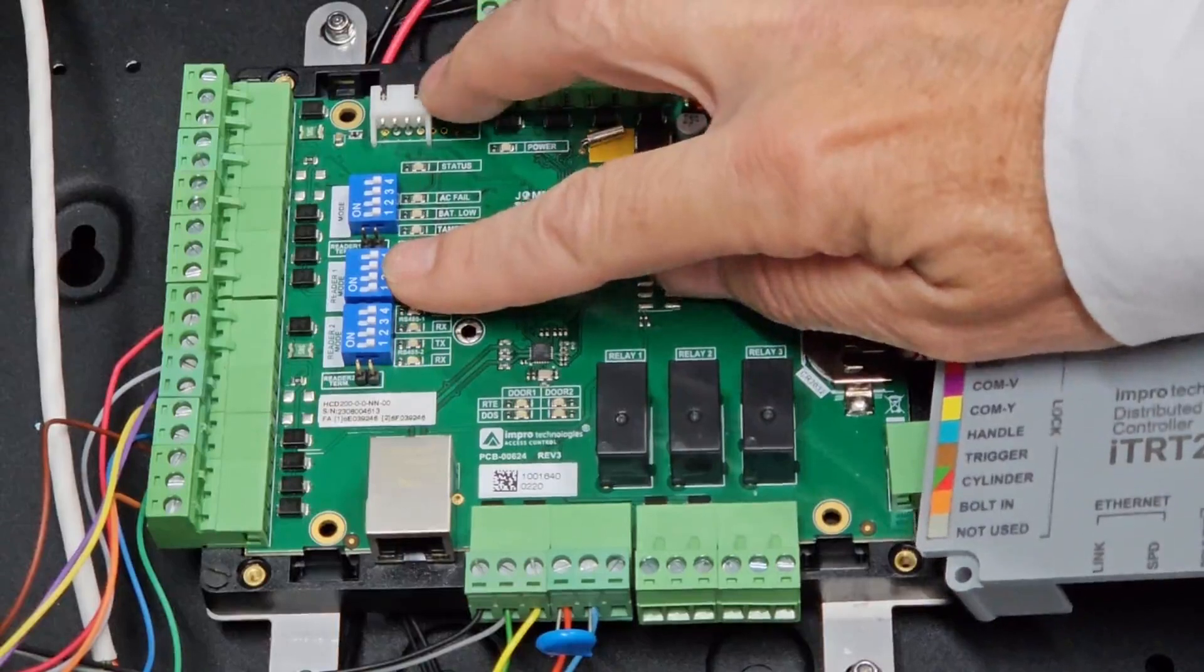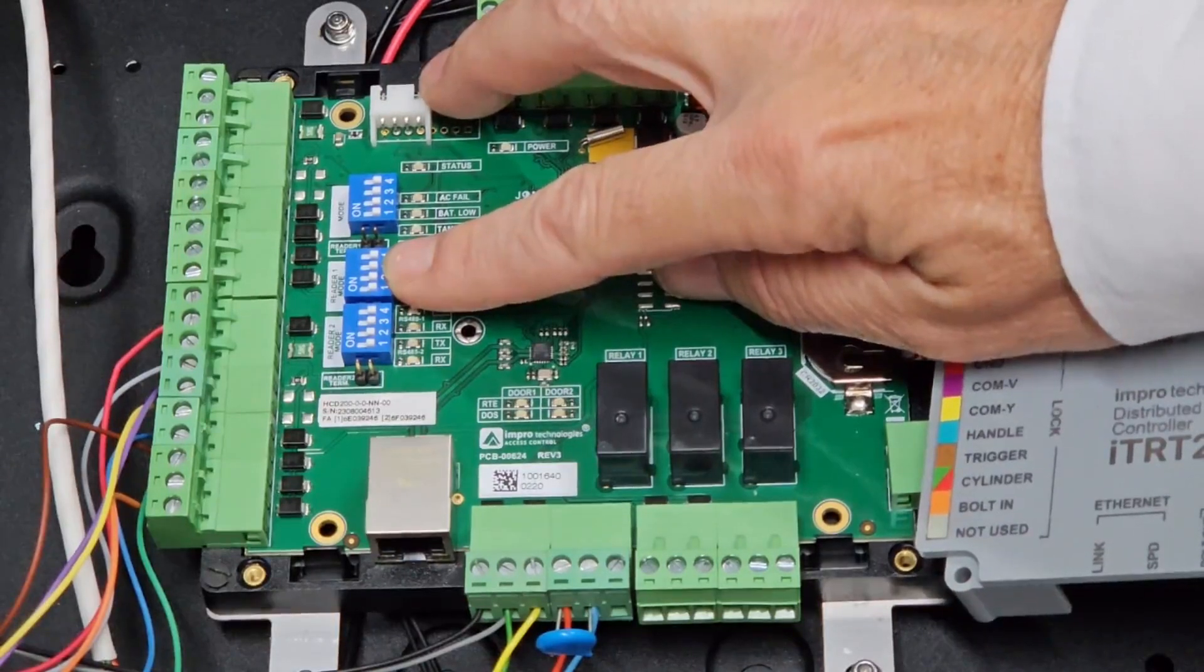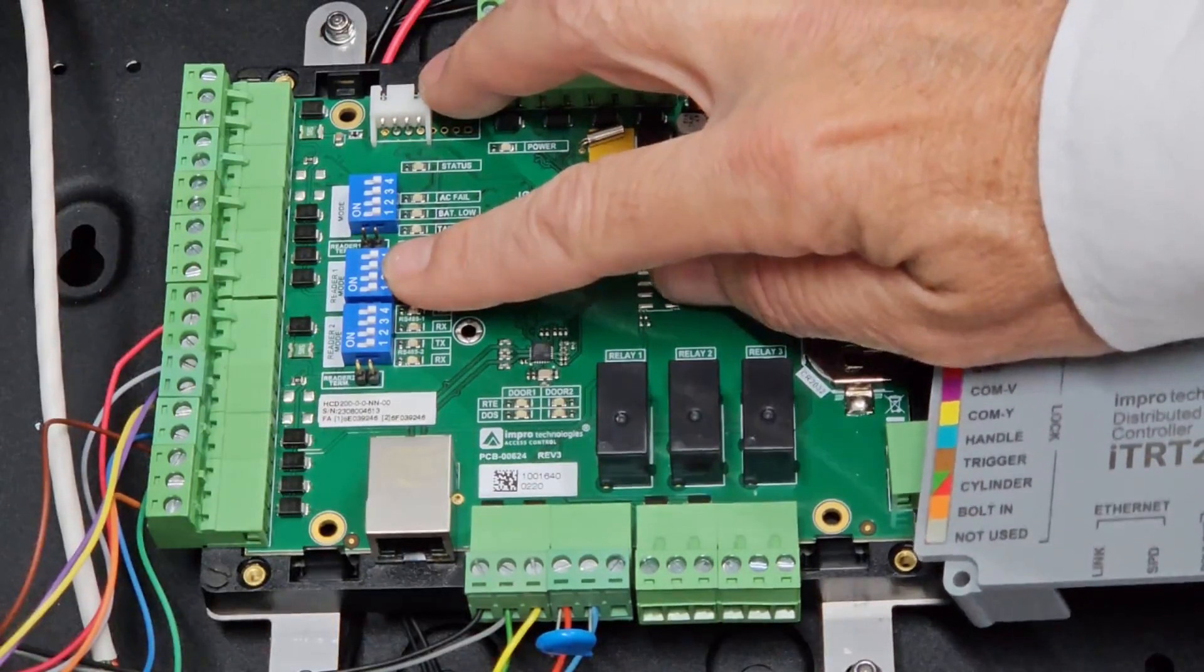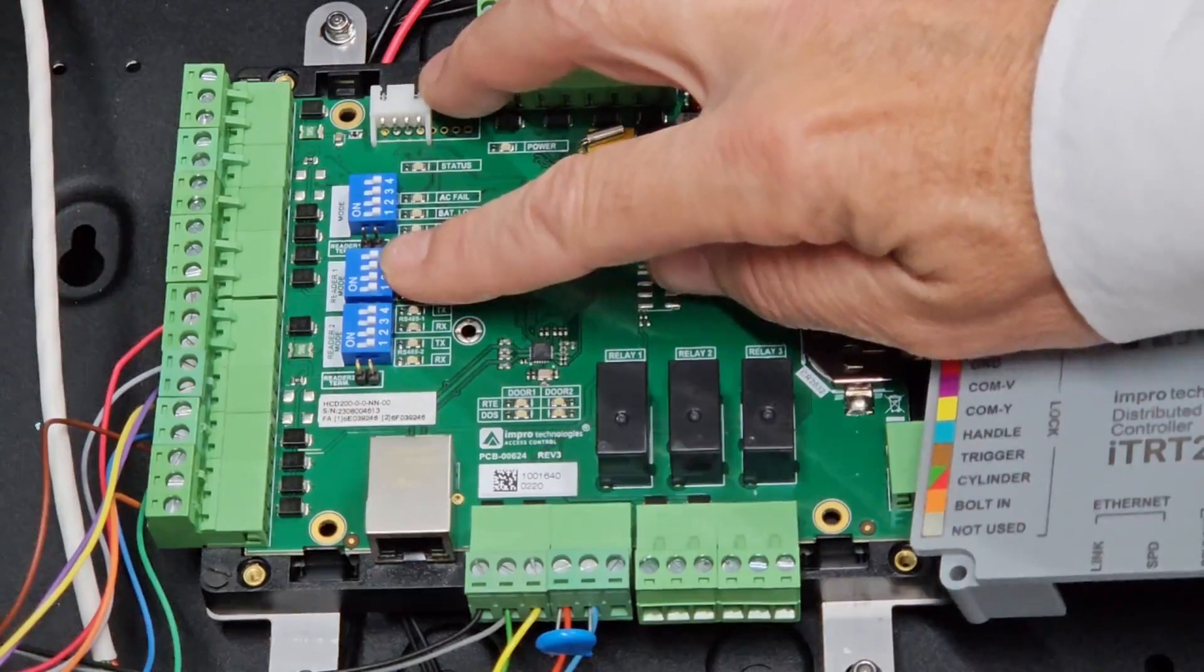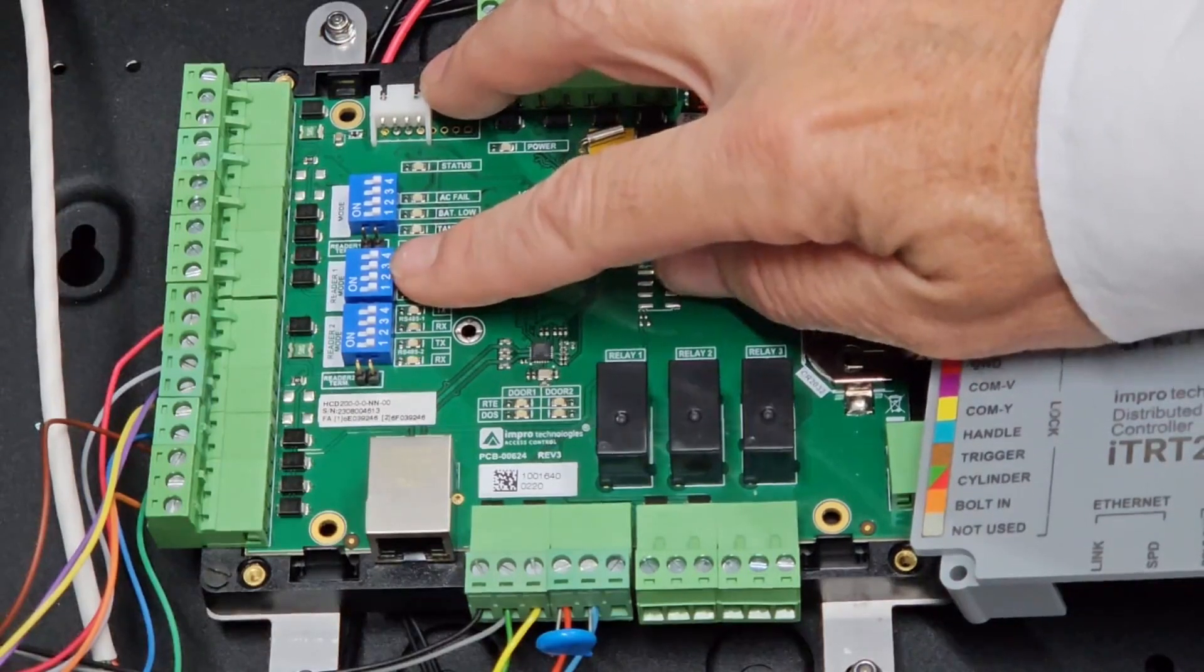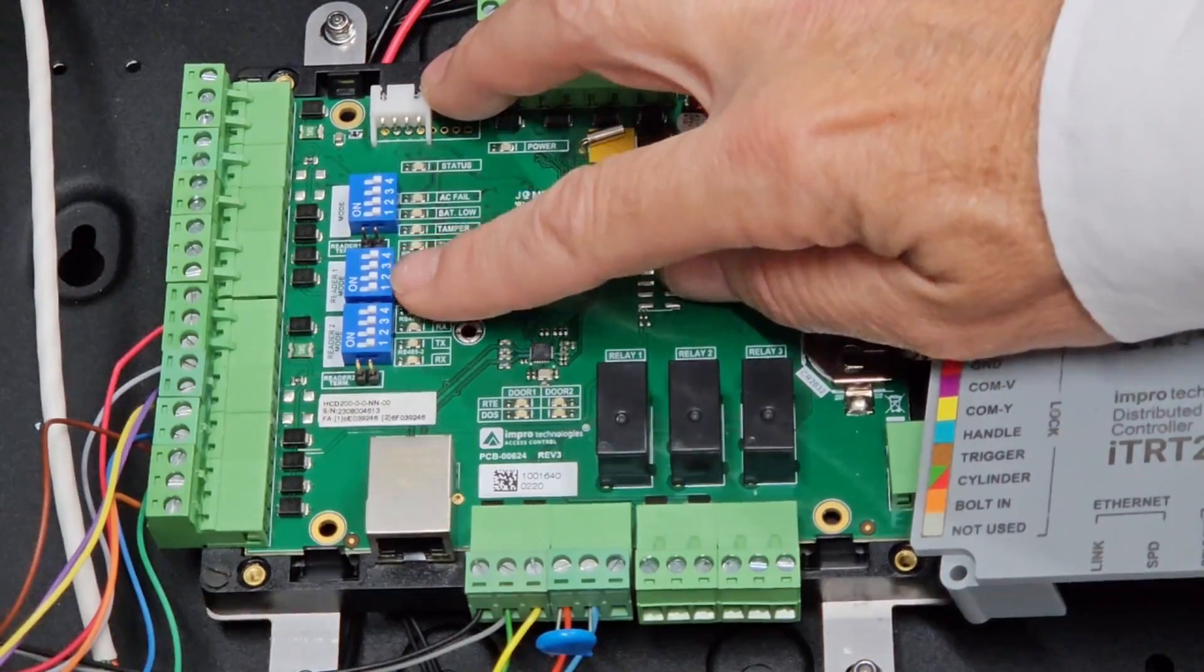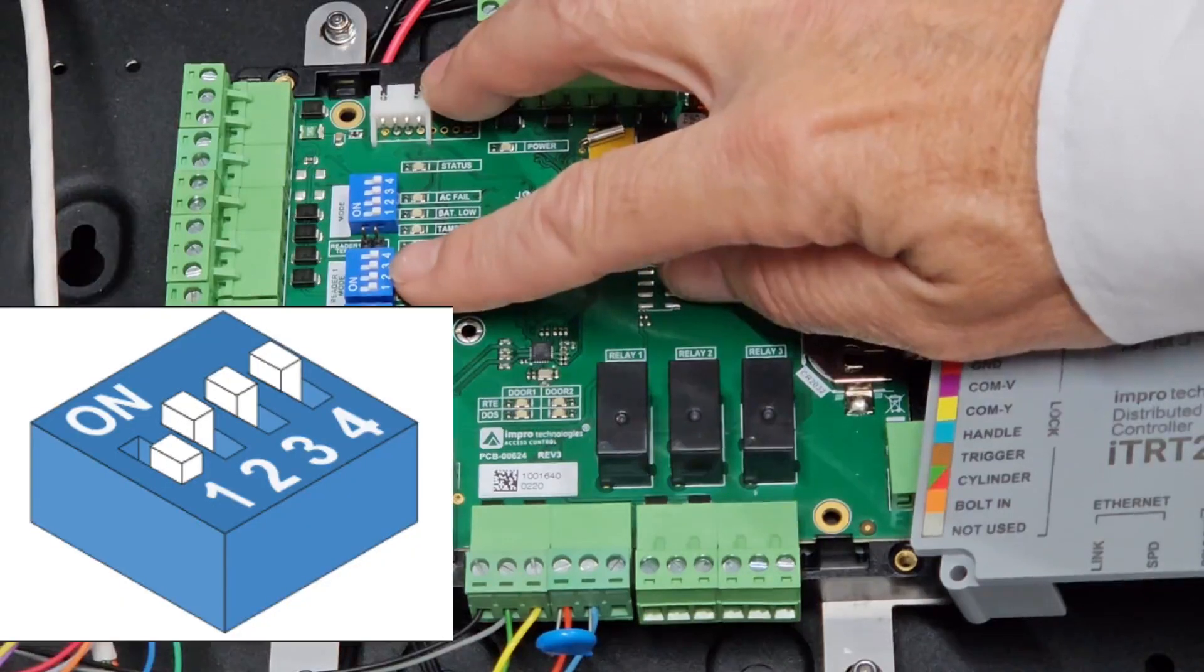This middle set of switches. Reader 1 switch should be set for the correct reader option. In the case of this installation, we need to set this to OSDP, which is 0111. That is all switches on, except the first one.